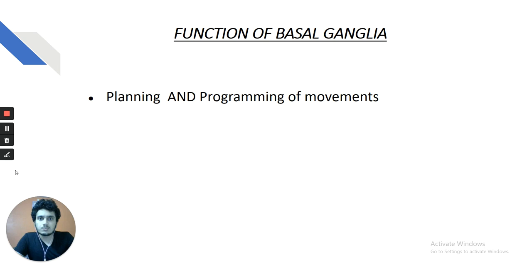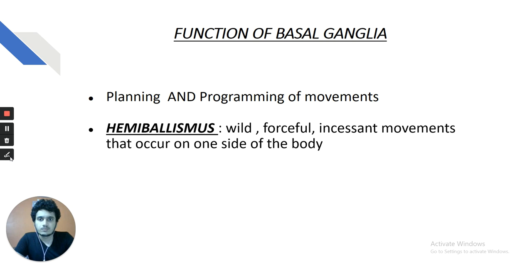The basic and most important function of the basal ganglia is planning and programming of movements. Whenever there is disease of the basal ganglia, there is loss of this planning and programming, resulting in abnormal and involuntary movements.